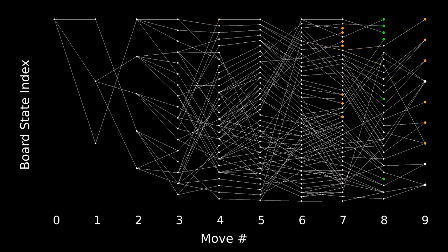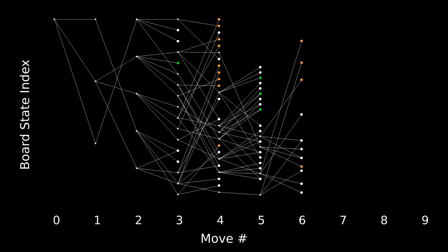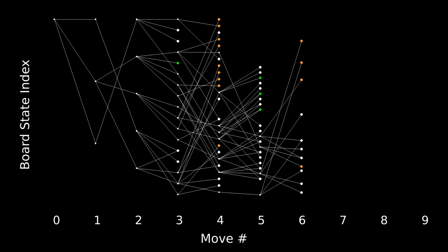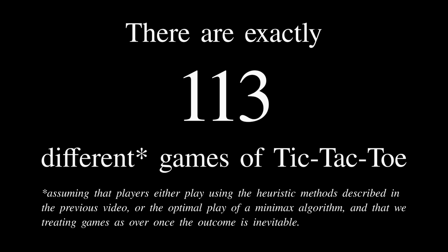So I think it's actually pretty reasonable to prune back this tree and end the games when the outcome is inevitable. And when you do that, you arrive back at the much more modest number of 113 different games.